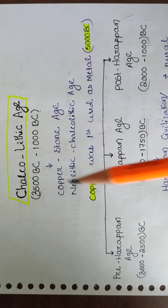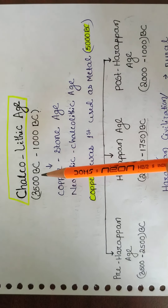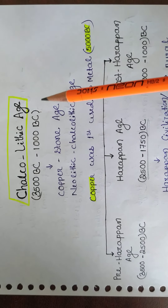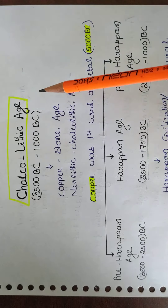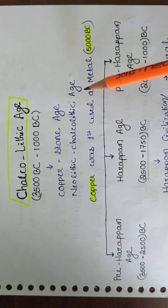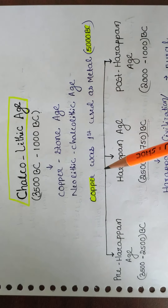Hello friends, good afternoon. Let's start today's history class. Today we'll read about the Chalcolithic Age. The time period of the Chalcolithic Age is 3500 BC to 2000 BC. Chalcolithic is also called the Copper Stone Age or Neolithic Chalcolithic Age. Copper was first used in 5000 BC.